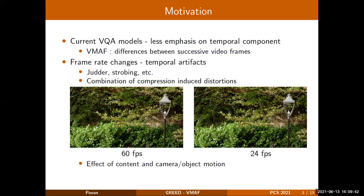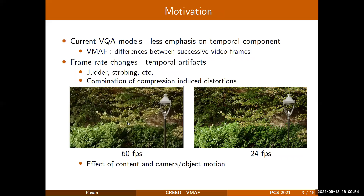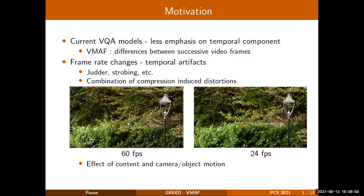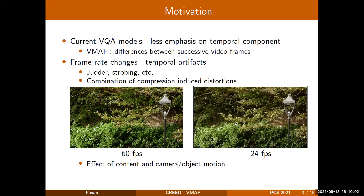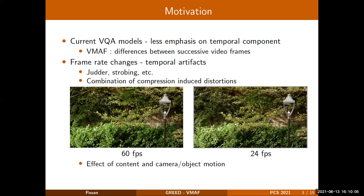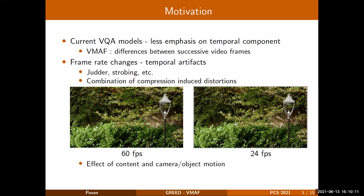Additionally, frame rate dependent video quality assessment is quite challenging as the effect of content is more pronounced, as can be observed in another illustration shown here, where a video with comparatively less motion can be viewed at 60 FPS. Viewing the same video at 24 FPS, you can observe that there is not much of a quality difference. The key takeaway is that the effect of content and the presence or absence of camera and object motion can be quite dominant when analyzing video quality in terms of frame rate.